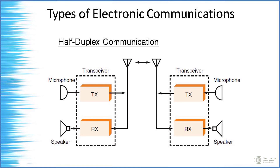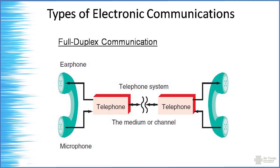Half duplex has two separate circuits — transmitter and receiver — but only one side can transmit at a time. If both sides transmit simultaneously, neither can understand the other. The example is a two-way radio: when one person is transmitting (pressing the button), the other can only listen. Then the other person presses to talk and the first person receives. That alternating arrangement is half duplex.